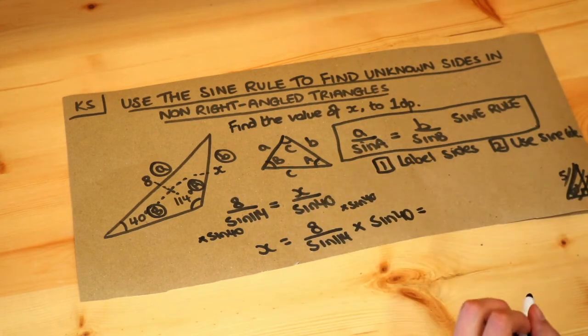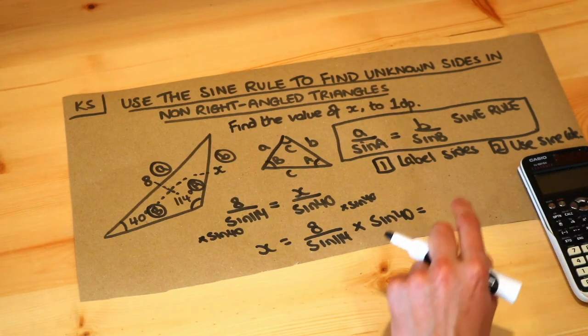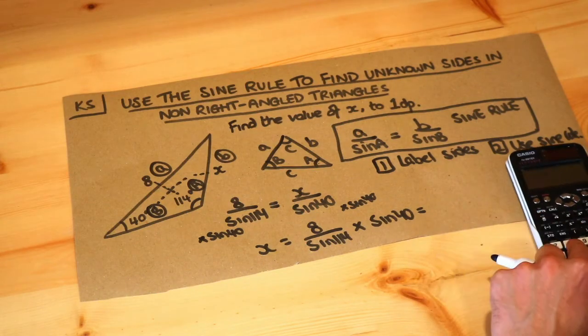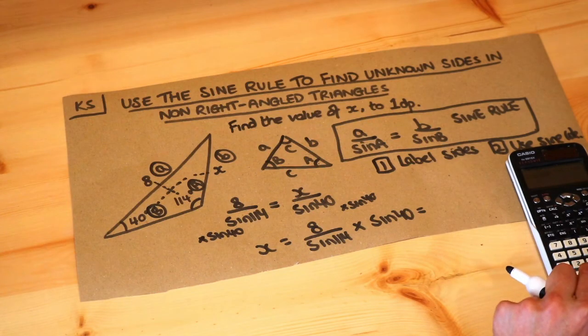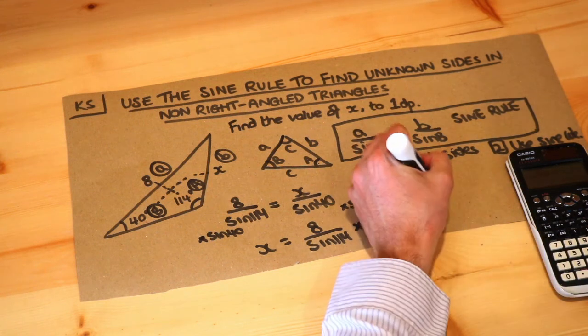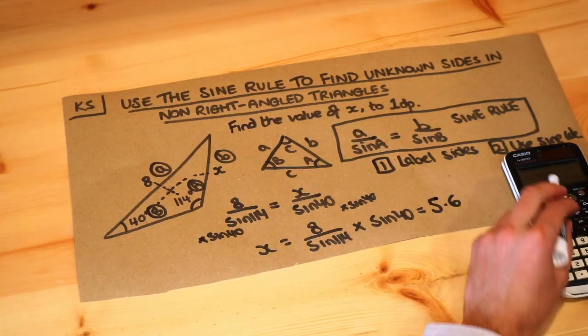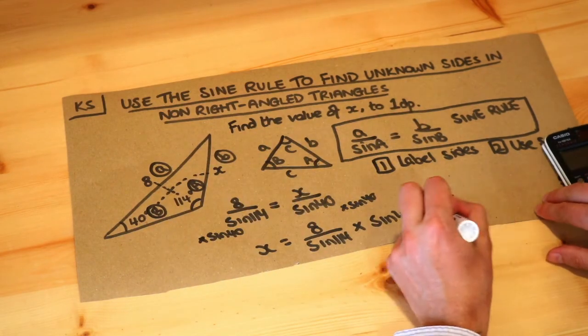Then we can just put that in our calculator, making sure your calculator is in degrees mode. If you're using a Casio calculator, there should be a little D at the top. Let's do that: 8 over sine of 114 multiplied by sine of 40, making sure you close the brackets, and that gives you 5.6. It's only to one decimal place, so it's 5.6 with no unit at all. That is the final answer.